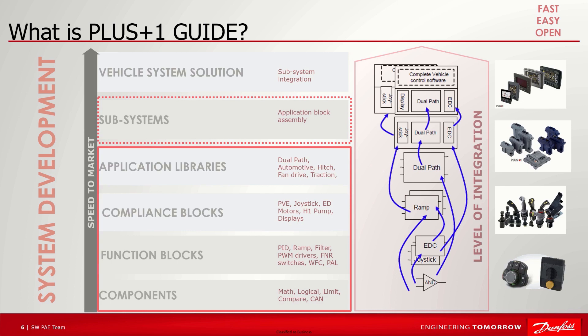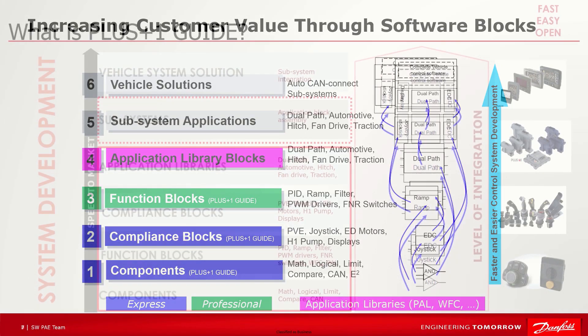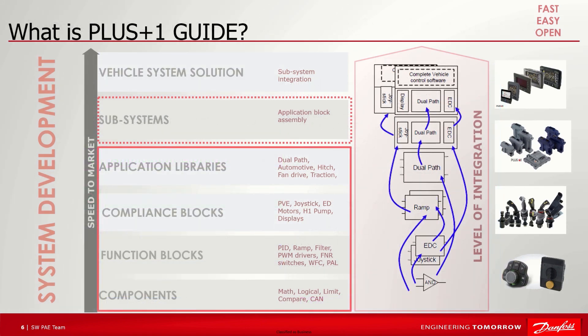Part of the value that PLUS ONE Guide delivers is the flexibility in system development when looking at levels of software integration. From the bottom up, we support six levels of integration at which you can start your design, anything from components to complete vehicle system solutions. The lower the level, the more complex and higher degree of effort that is required. Guide is an ever-expanding set of building blocks that allows you to choose everything from basic components to operation-ready solutions, all expertly designed and tested by our engineers for easy integration at all levels to help you maximize machine performance.